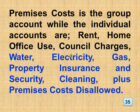Premises costs is the group account while the individual accounts are: rent, home office use, council charges, water, electricity, gas, property insurance and security, cleaning, plus premises costs disallowed.